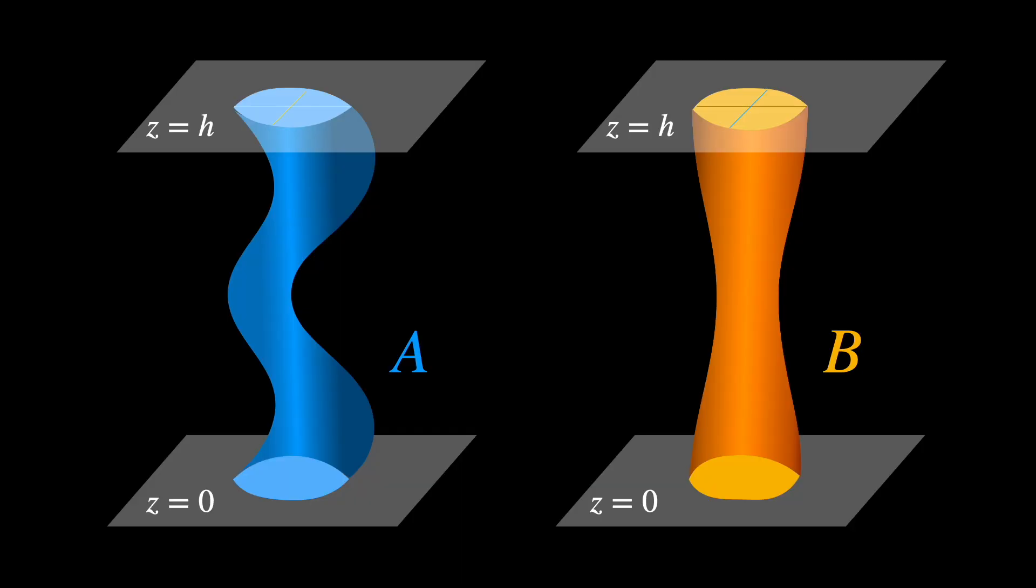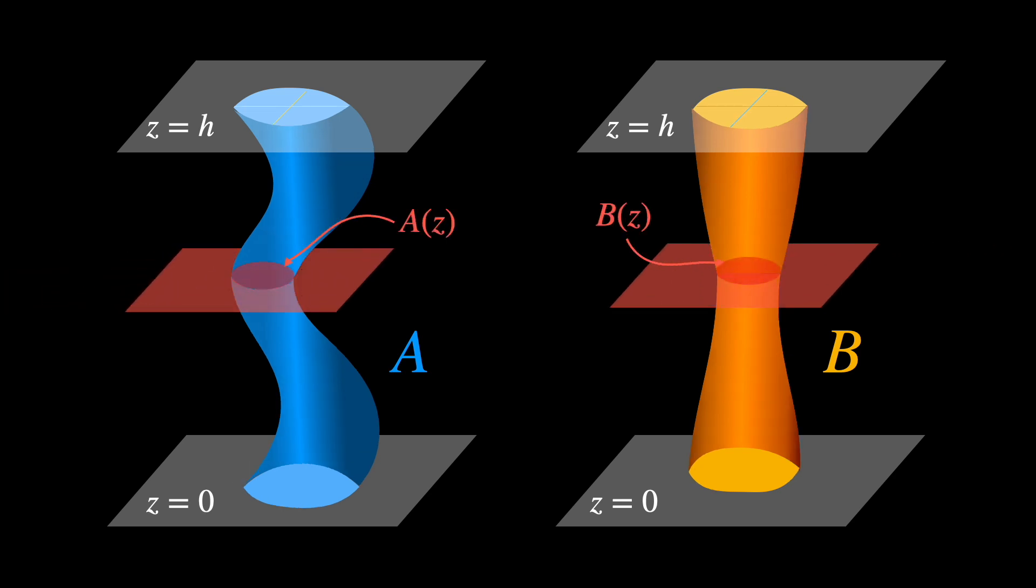Let's prove this fact and apply it to our problem. Consider two solids A and B, each contained between the parallel planes Z equals zero and Z equals H. Let the cross-sections of solids A and B at height Z be A of Z and B of Z, respectively. We're given that for any Z between zero and H, A of Z equals B of Z.